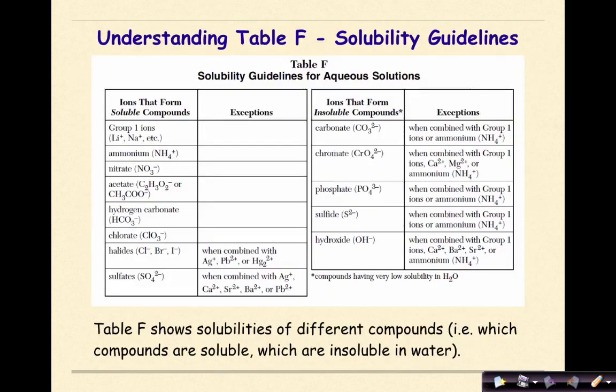Let's start off by talking about table F. Table F is the solubility guidelines for aqueous solutions, which means our solvent here is going to be water. So table F shows solubilities of different compounds, in other words, which compounds are soluble and will dissolve in water, or which are insoluble and will not dissolve in water. They will stay as a solid, or another term, precipitate.